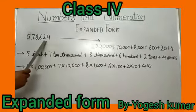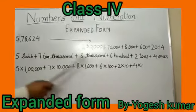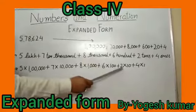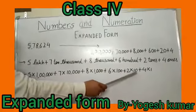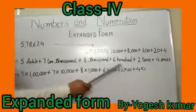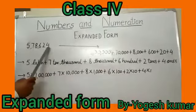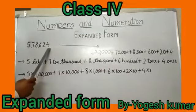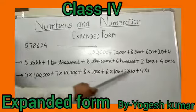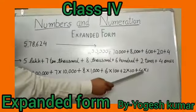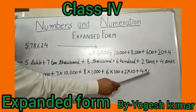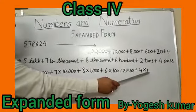2 lies on tens place — 2 multiplied by ten. And 4 lies on ones place — 4 multiplied by one. Thank you.